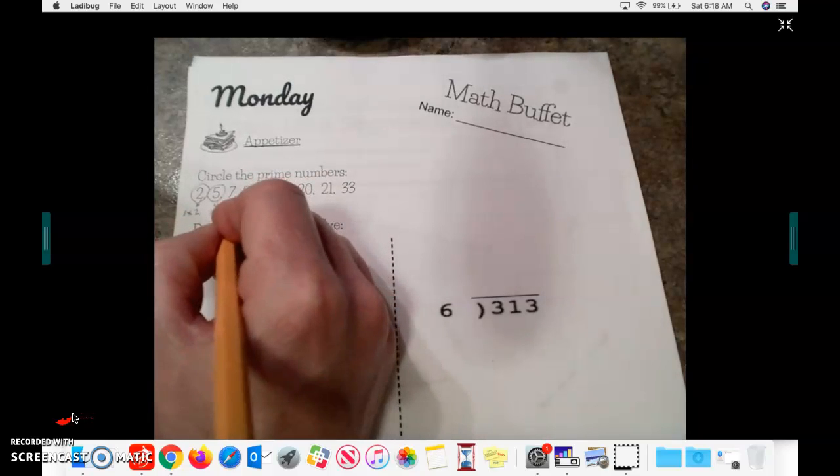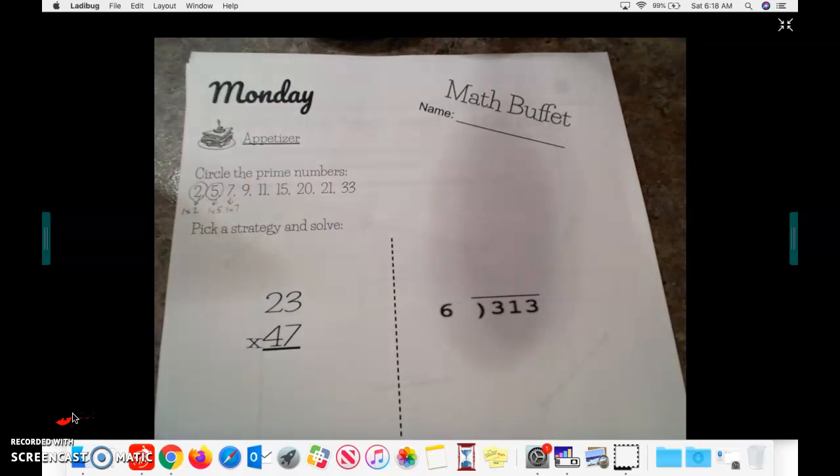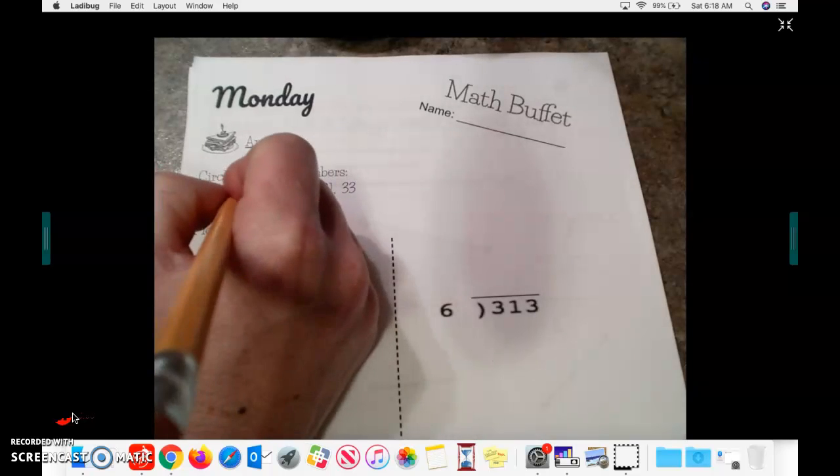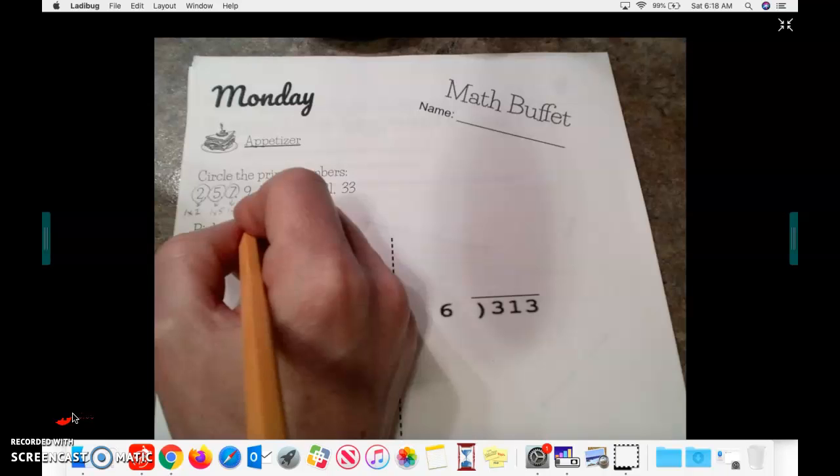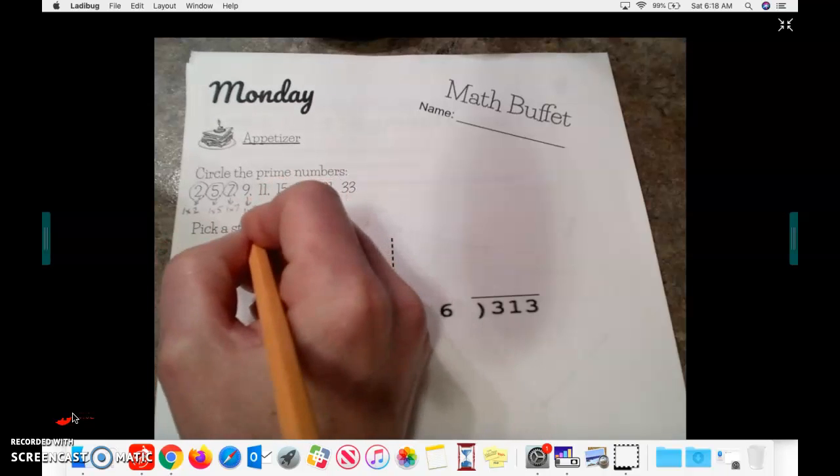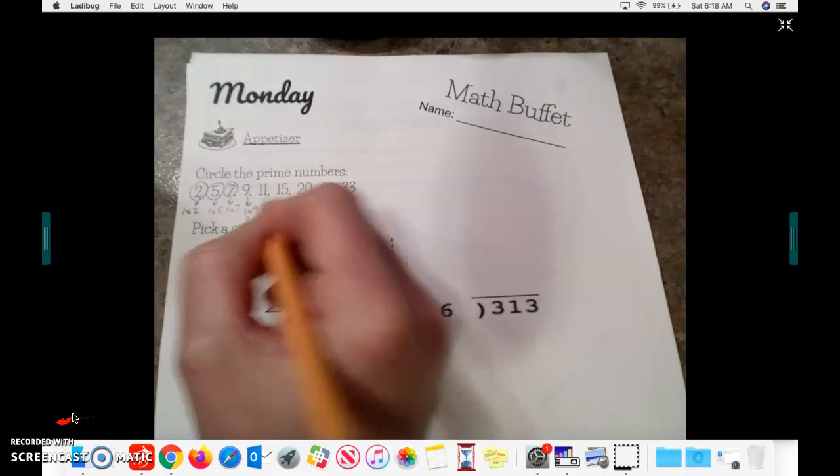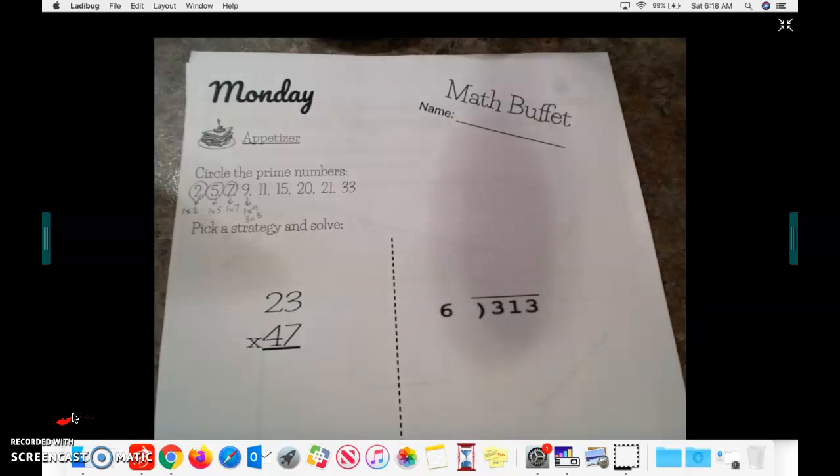I get to 7. 1 times 7. There's nothing else I can multiply together to get 7. So I'm going to circle the 7. 9 is going to be a little bit different, because I know I can do 1 times 9, and I can also do 3 times 3. So it is not a prime number.